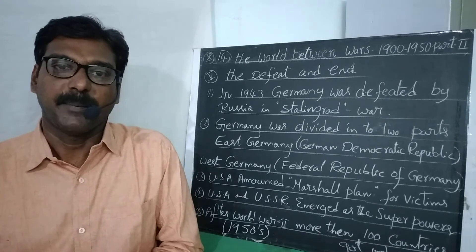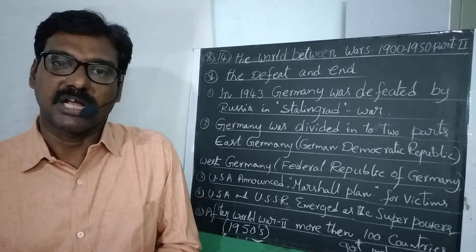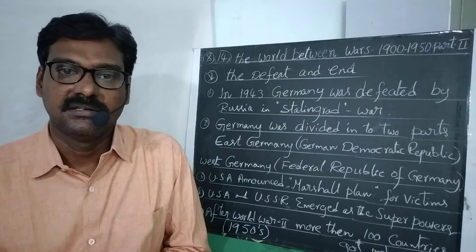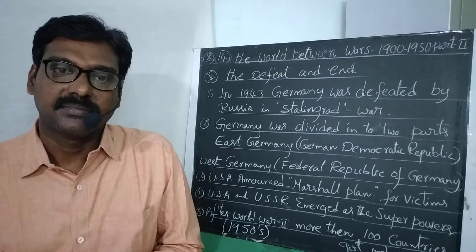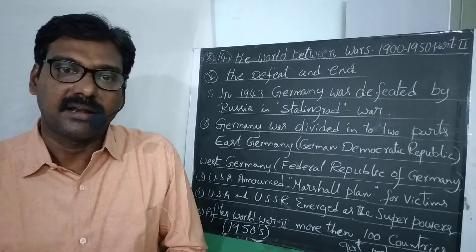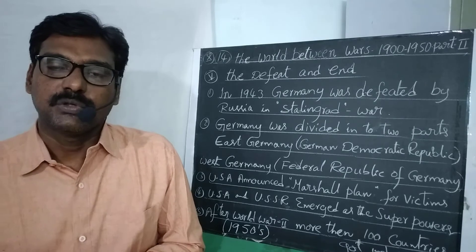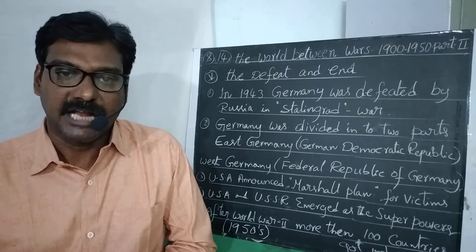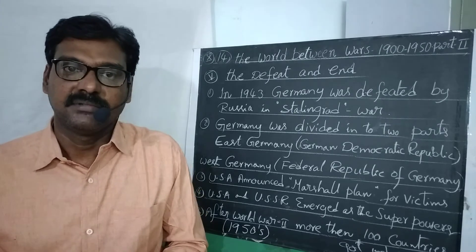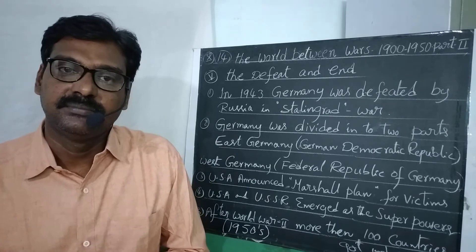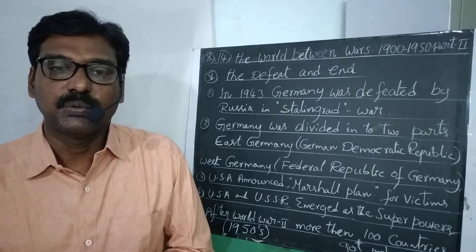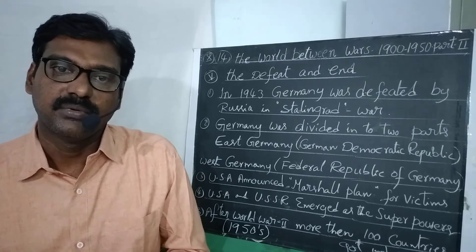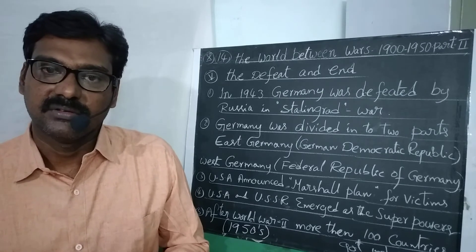Many countries came under crisis — France, Germany, Italy, England, and Japan. After the Second World War, the USA came up with the Marshall Plan. Through the Marshall Plan, America gave help to the victims of the wars, like Japan and other countries.